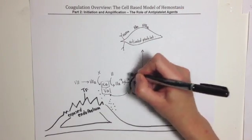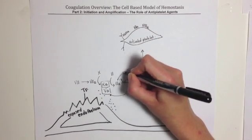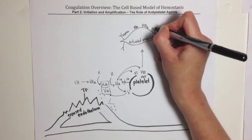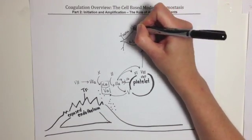finally, thrombin not only activates Factor XI, Factor VIII, but it activates larger quantities of Factor V on the surface of the platelet.